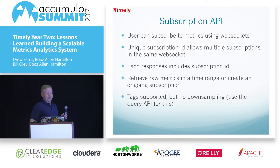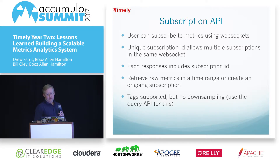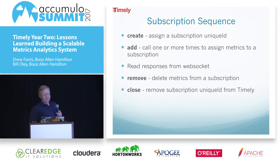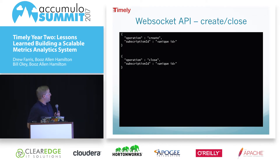Users can subscribe to metrics using WebSockets. They start with a unique subscription ID, so you can have different subscriptions under the same channel, and each response also has that subscription ID coming back so you can demux them. This gives you the raw metrics — it doesn't downsample. If you want downsampling, you still need to use the query API. You start by creating a subscription with a unique ID, add one or more metrics, remove them if no longer needed, and then close it. The operations look something like this with JSON notation — that's the create and close, the opposites.